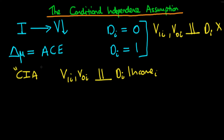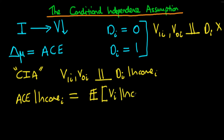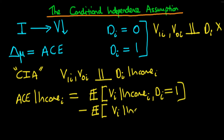After we've defined the conditional independence assumption, we can say that conditional on the level of income, we can evaluate the average causal effect of the treatment — that is, the average causal effect of infrastructure spending. Essentially that is the expectation of VI given the level of income in that state, given DI equals 1, minus the expectation of VI given the state's level of income and given DI equals 0.